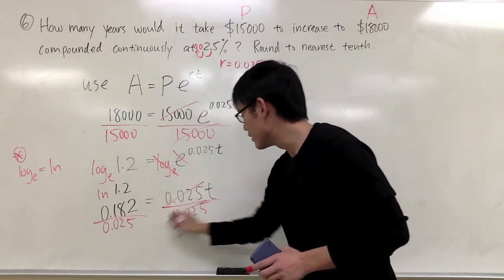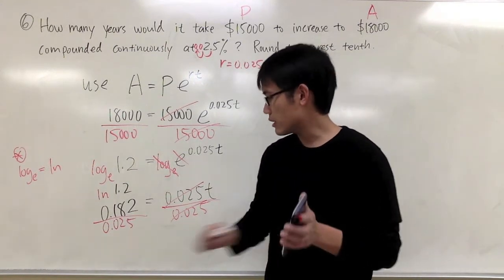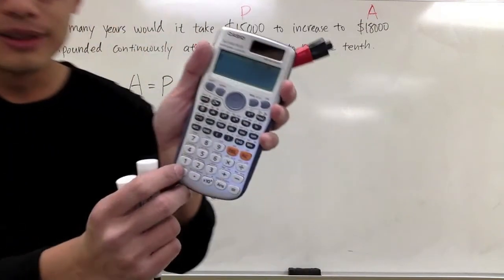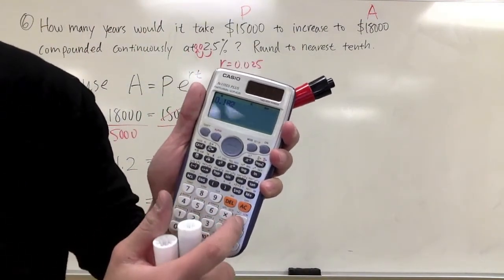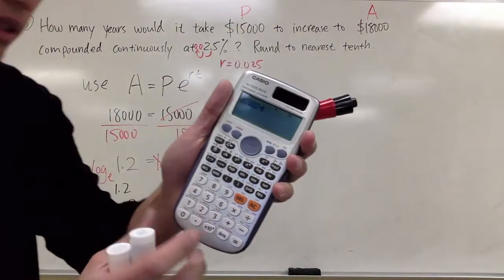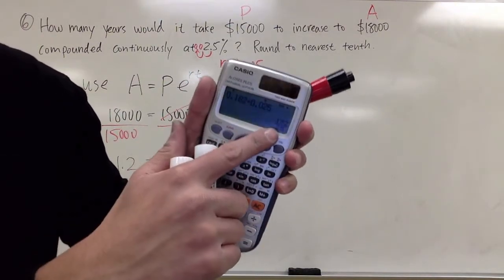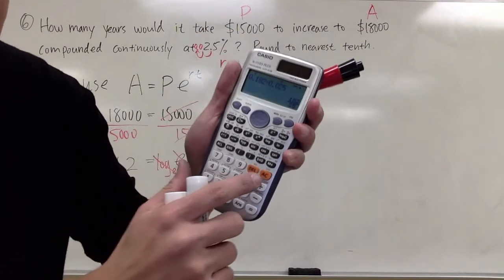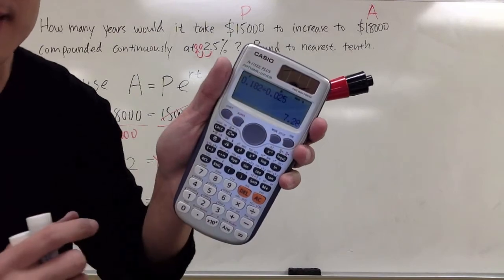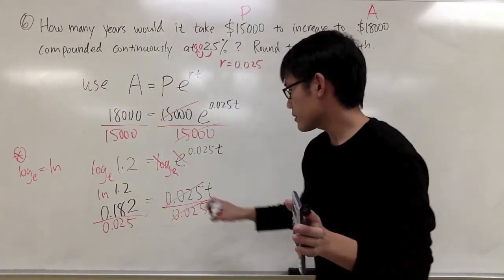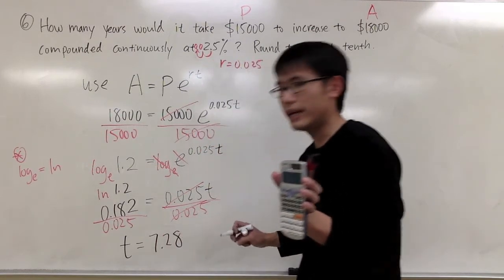So I can cancel this out. This is 0.182 divided by 0.025. My calculator will give me a fraction first. You just have to press the S to D button, and I can get decimal. So I can get t is equal to 7.28 on the calculator.